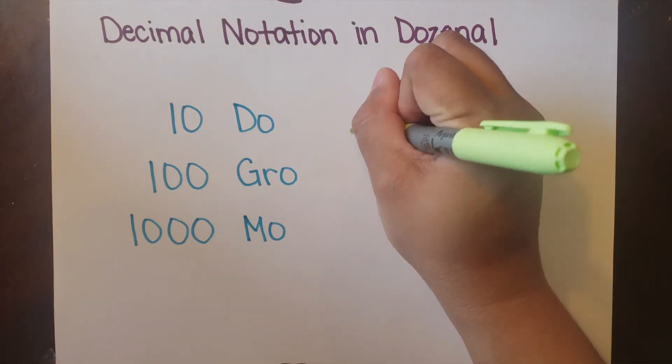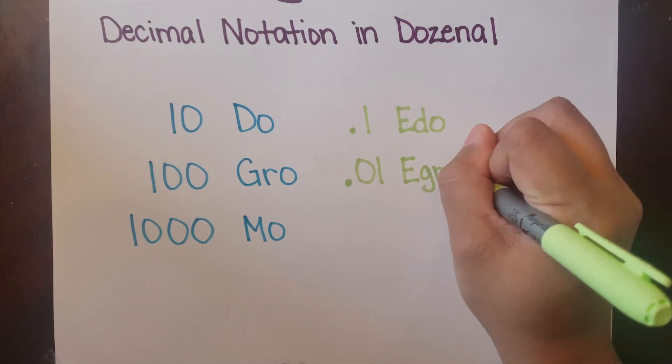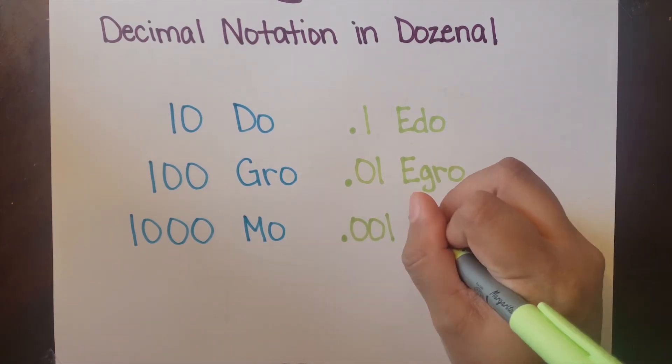In dozenal, point one would be e doe, point zero one would be e grow, and point zero zero one would be e mo.